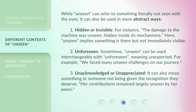While 'unseen' can refer to something literally not seen with the eyes, it can also be used in more abstract ways. 1. Hidden or invisible. For instance, 'the damage to the machine was unseen, hidden inside its mechanisms.' Here, 'unseen' implies something is there but not immediately visible.